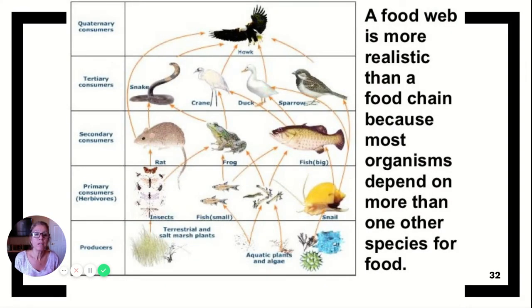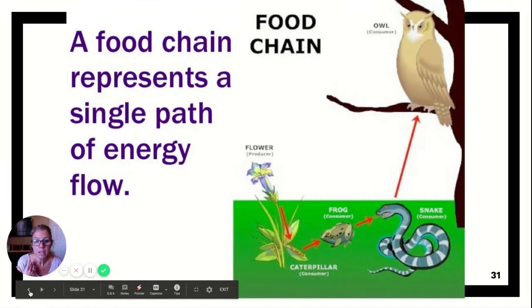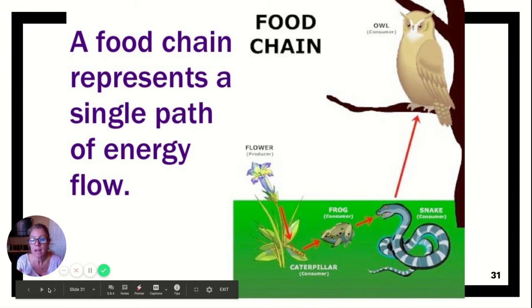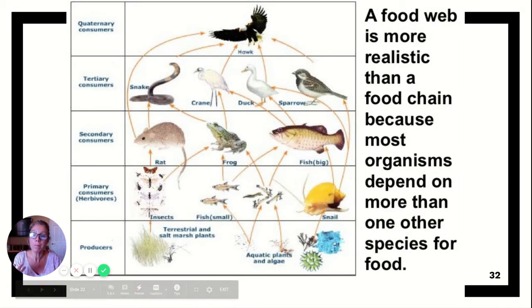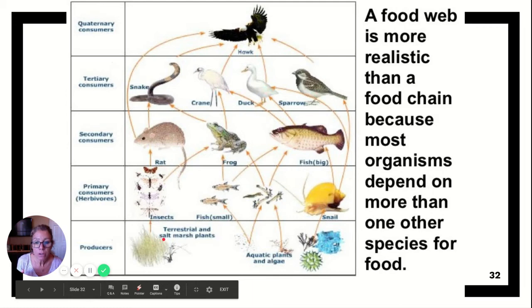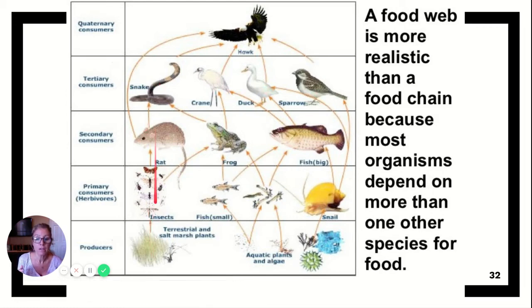A food web is more realistic than a food chain because it shows all the interconnections. Does a snake only eat frogs? No — he eats mice too. All the interacting food chains form a food web, which is more representative of an ecosystem. A food web consists of various interconnecting paths of energy flow. Not only are nutrients flowing through here, but energy is flowing through as well.